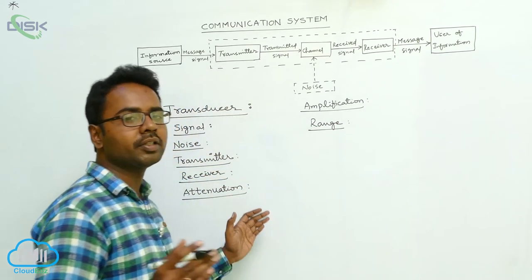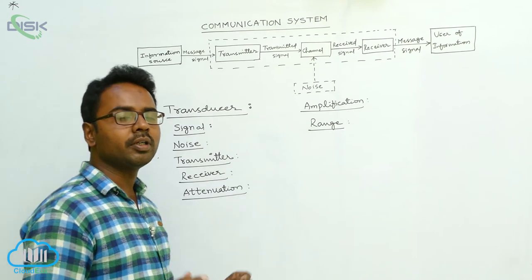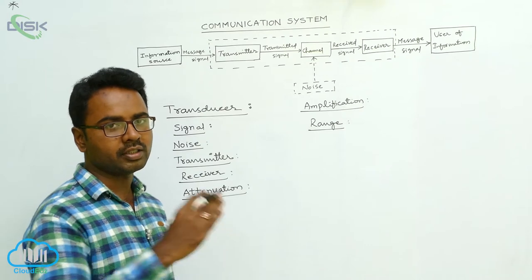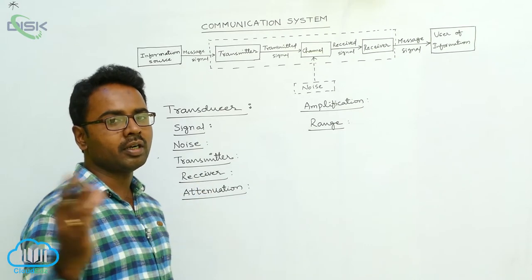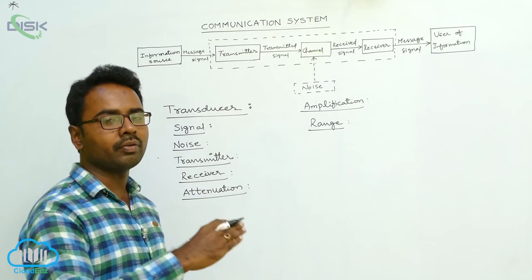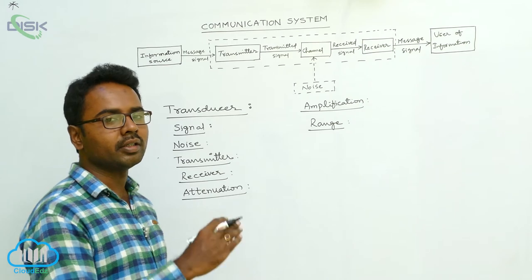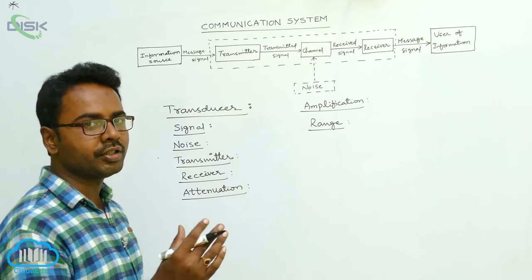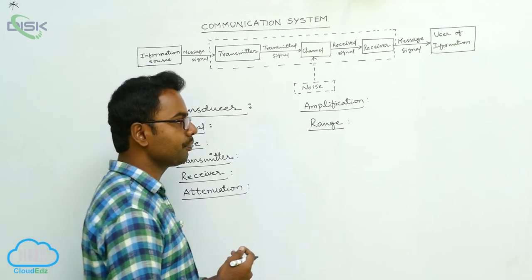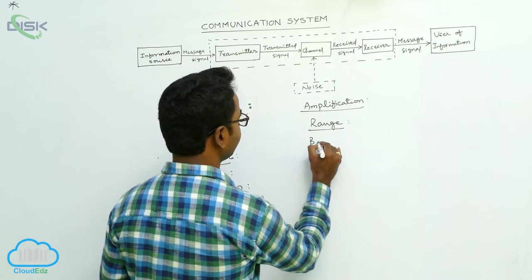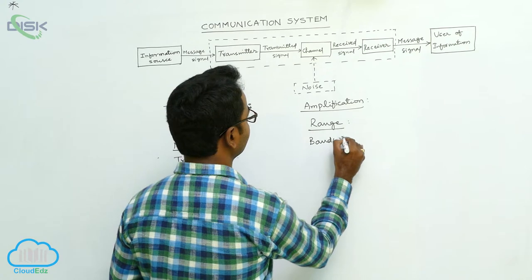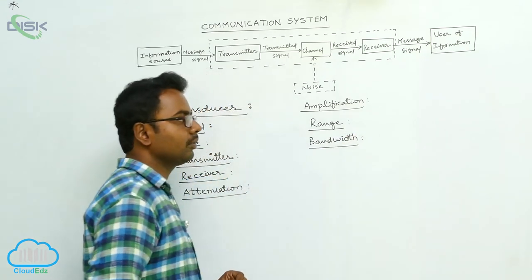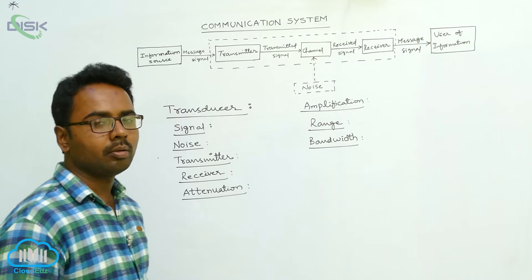Range is the maximum distance between the transmitter and receiver over which we can receive the signals. This long distance between the transmitter and receiver over which signals are transmitted is called the range.